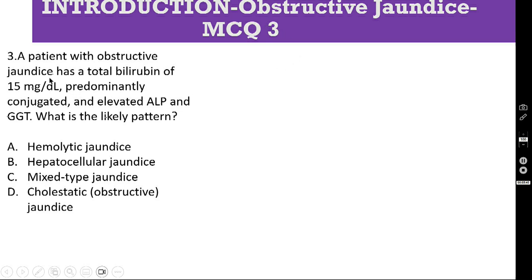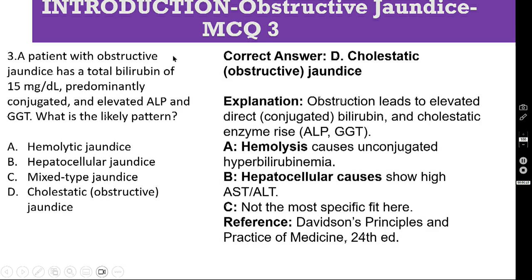MCQ number 3: A patient with obstructive jaundice has a total bilirubin of 15 mg/dL, predominantly conjugated, and elevated ALP and GGT. What is the likely pattern? Options: A. Hemolytic jaundice, B. Hepatocellular jaundice, C. Mixed type, D. Cholestatic or obstructive jaundice. The correct answer is D — cholestatic or obstructive jaundice — because obstruction leads to elevated direct (conjugated) bilirubin and the cholestatic enzymes ALP and GGT are also raised.